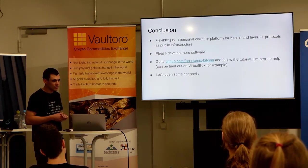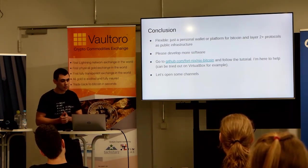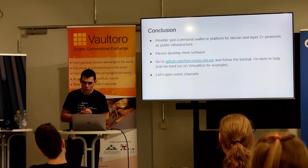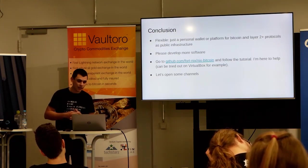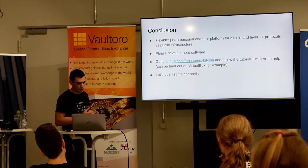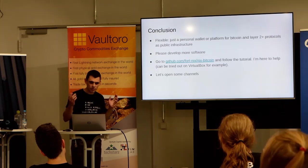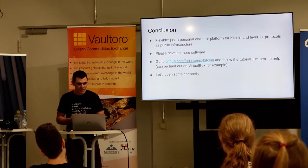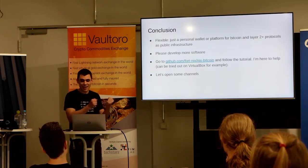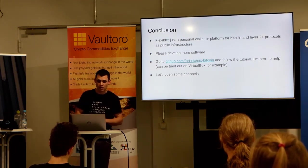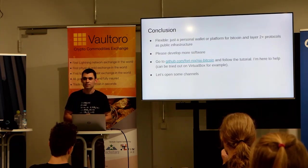In conclusion, the whole NixBitcoin system is relatively flexible. You can use it as a personal wallet as I do, or as a platform for Bitcoin because you can also build stuff on top of it — for example the recurring donations module — and other layer 2 protocols that we want to see. We're interested in adding CLightning plugins, more on-chain privacy with automatic coin joins, watchtowers, custodial wallets for your friends and family. Please develop more software, because that is what we want to add to NixBitcoin. If you want to try it out, just go to our GitHub repo, follow the tutorial — you can try it on VirtualBox. I'm here to help. Let's open some channels. Thank you.